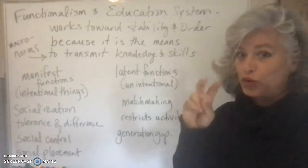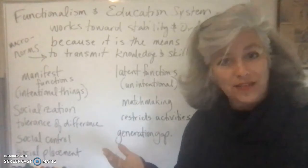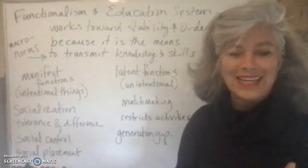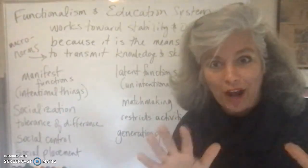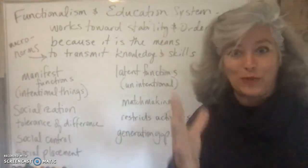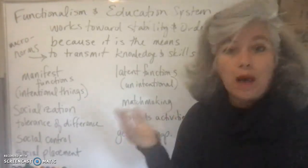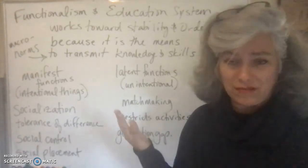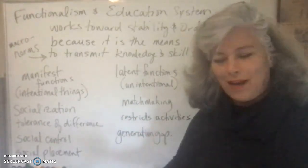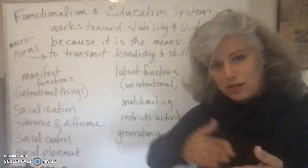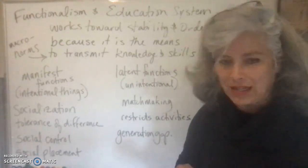Another latent function is that school restricts activities and steers you toward socially approved ones. Being held captive in the school system for so many years means you're channeled into book clubs, debate clubs, sports teams, cheerleading, choir, and similar socially approved activities. Homework further restricts activities even outside the school building. School also keeps you out of the workforce — some 13- or 14-year-olds are fully capable of holding a 40-hour week job, but the law requires school attendance until a certain age and limits working hours until then. In this way, you're not out being delinquent — it restricts your activities.